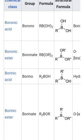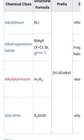Finally, we have functional groups containing metals. We have alkyl lithium, alkyl magnesium halide (Grignard reagent), and alkyl aluminium — these are organometallic compounds. Alkyl aluminium is related to Ziegler-Natta catalyst, if you have heard that name before.